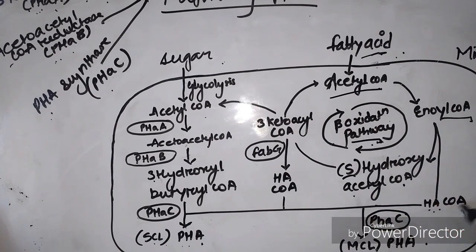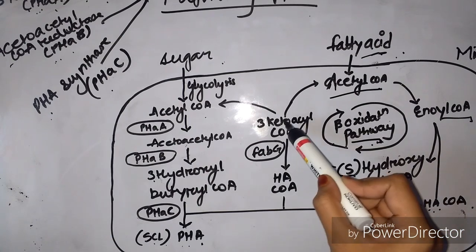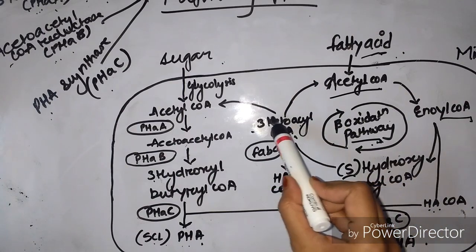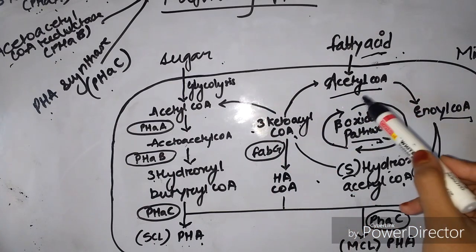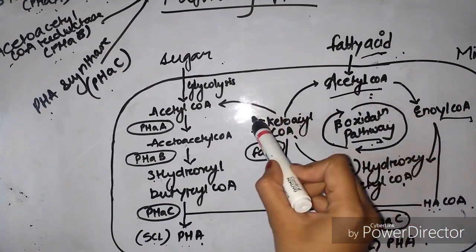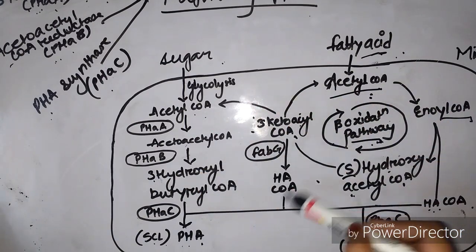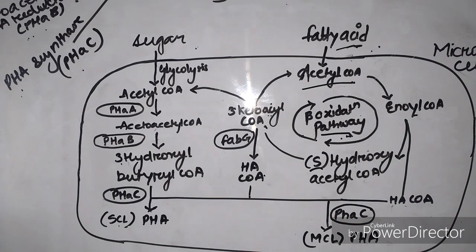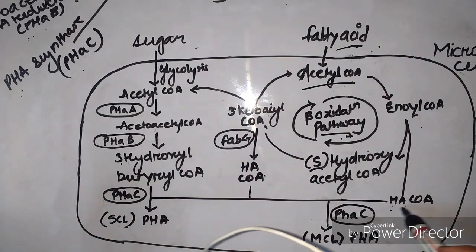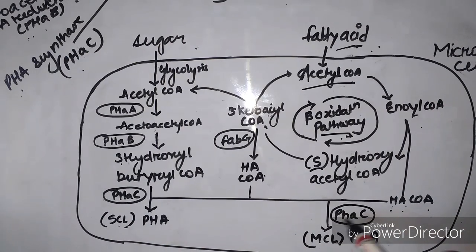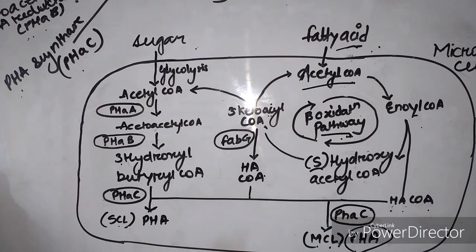The first molecule, with the action of PHA-synthase enzyme, produces medium chain length PHA, and the second molecule gives 3-ketoacyl-CoA, which gives two acetyl-CoA molecules. This 3-ketoacyl-CoA, when the enzyme FabG acts, gives hydroxyacyl-CoA, which with PHA-synthase gives medium and short chain length PHA. Here we have seen how the bacteria perform the pathway to synthesize PHA.